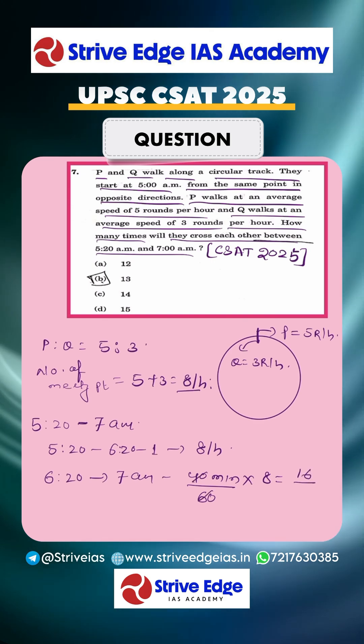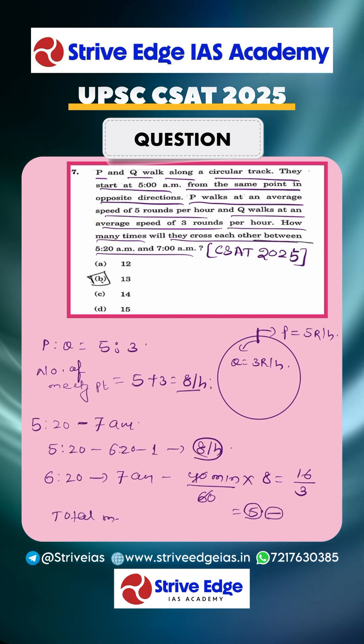16 by 3, so it is 5 point something. We are not concerned about this fraction because meetings will happen at the round figure. So number of meeting points here is 5, here is 8. So total meeting points equals 5 plus 8 equals 13.